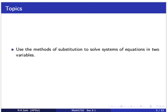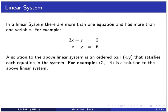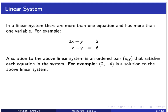So first, what is a linear system? In a linear system there are more than one equation and also more than one variable. For example, 3x plus y equals 2 and x minus y equals 6. A solution to the linear system is always an ordered pair, depending upon how many variables are present. With two variables, it would be an ordered pair x and y that satisfies each equation in the system.